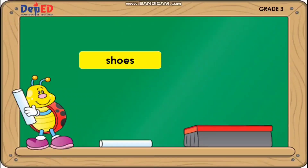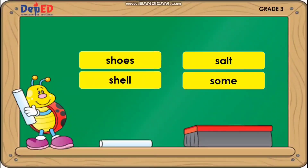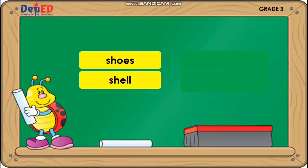Choose. Shell. Salt. Song. Which word has consonant digraph? Very good — Choose and Shell.